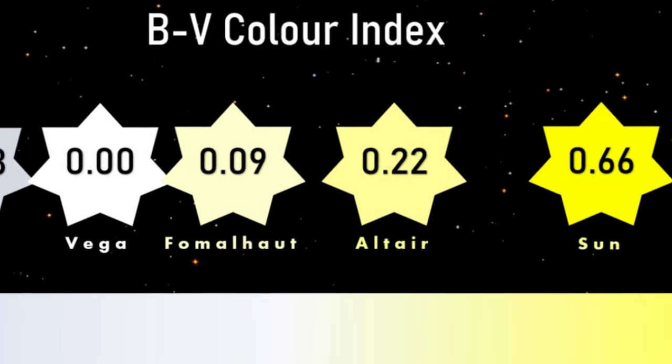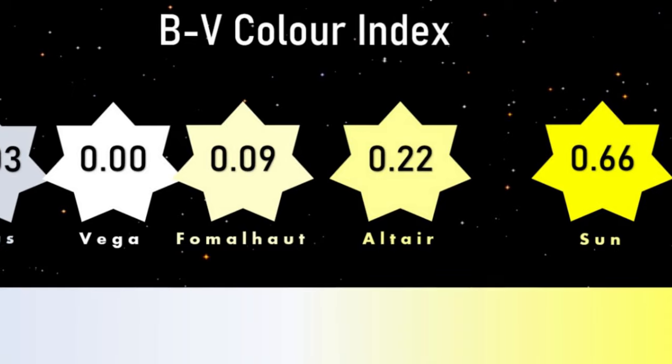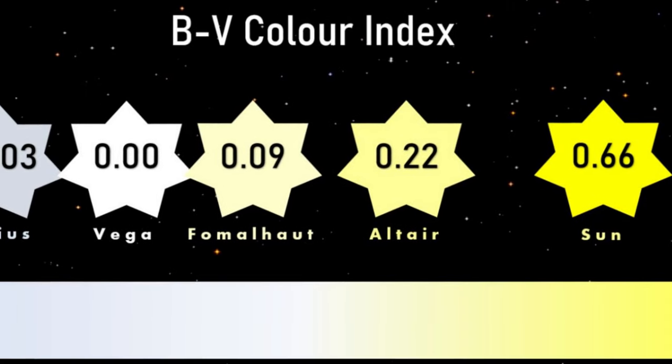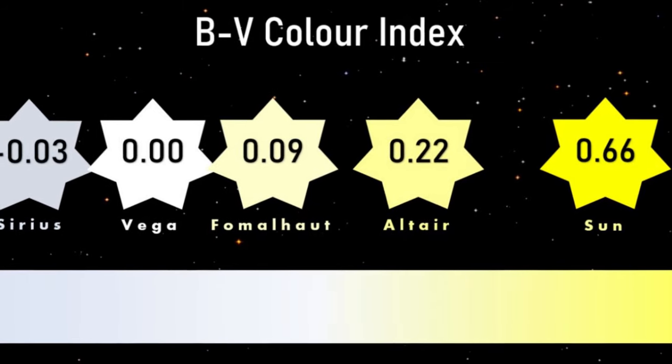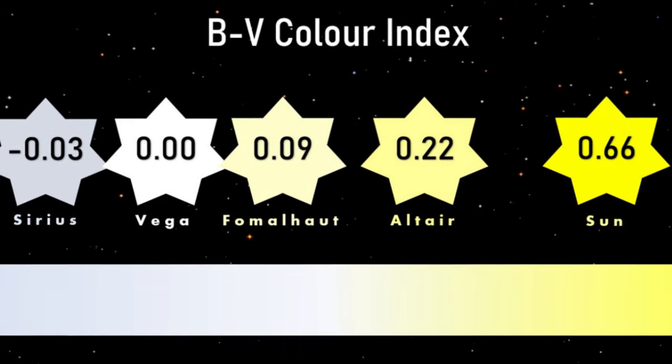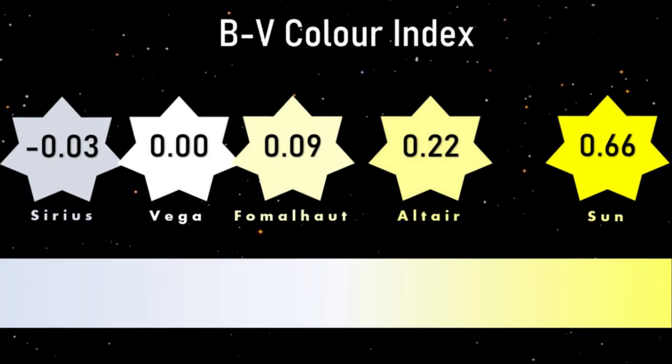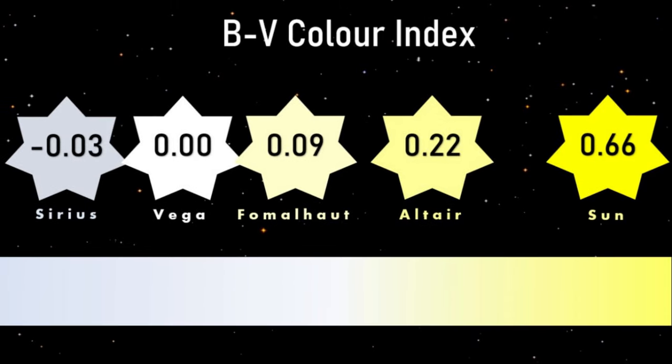With a BV colour index of plus 0.22, Altair is quite a lot more yellow-coloured than the other four, as we see here. Fomalhaut is also slightly yellowish at plus 0.09, while Vega is a perfect white, and indeed Sirius is slightly blue at minus 0.03. The lower the number the more blue a star is, and the higher the number the more yellow.